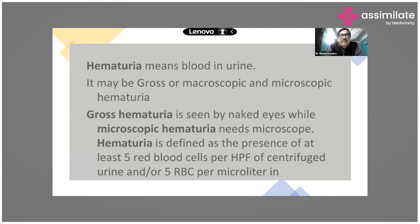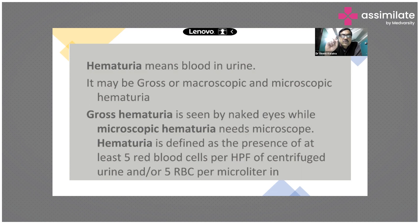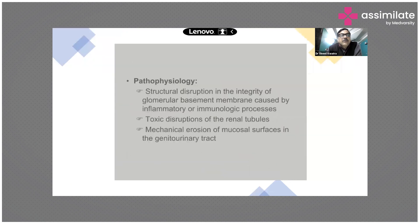Hematuria is defined as the presence of at least five red blood cells per high power field of centrifuged urine, or five RBCs per microliter in non-centrifuged urine. Remember: five RBCs per HPF in centrifuged urine, or five RBCs per microliter in uncentrifuged urine.